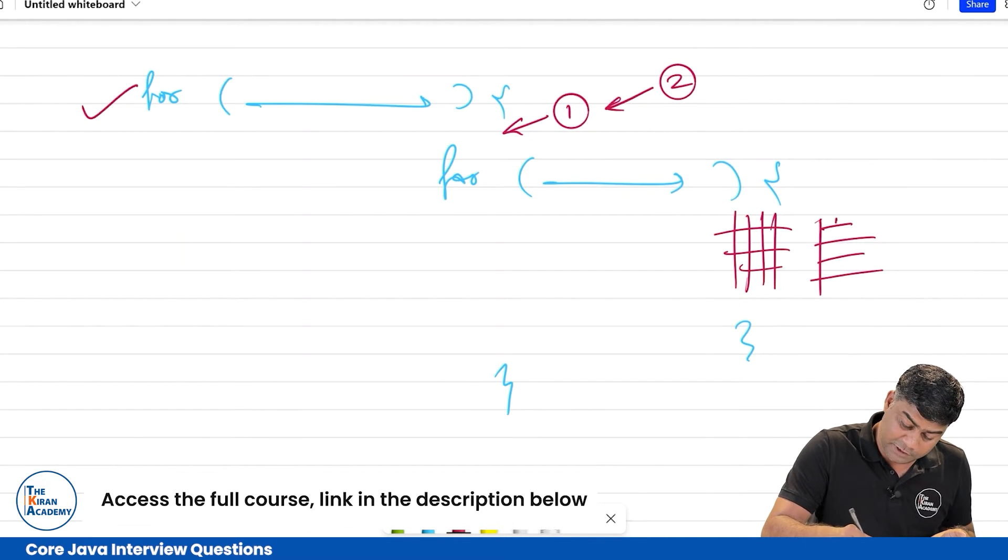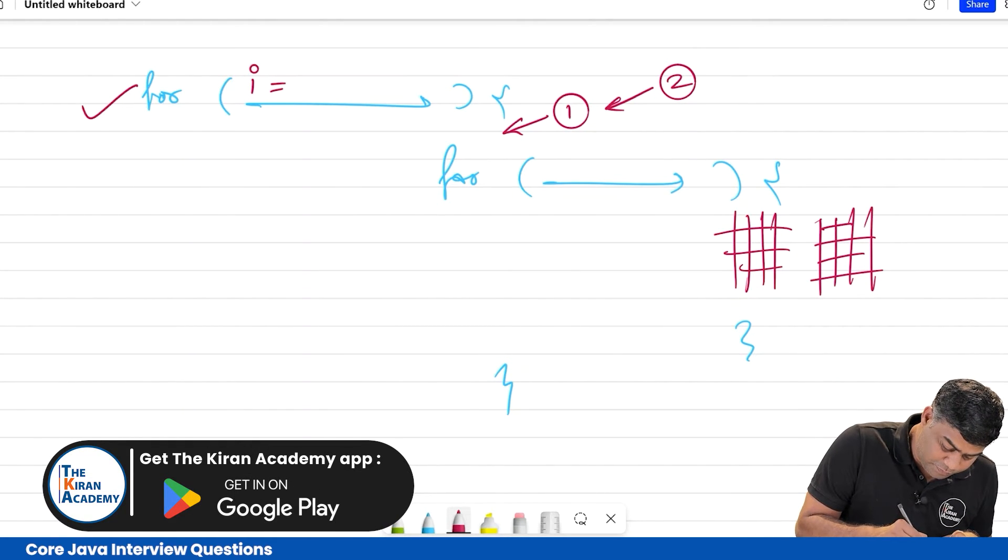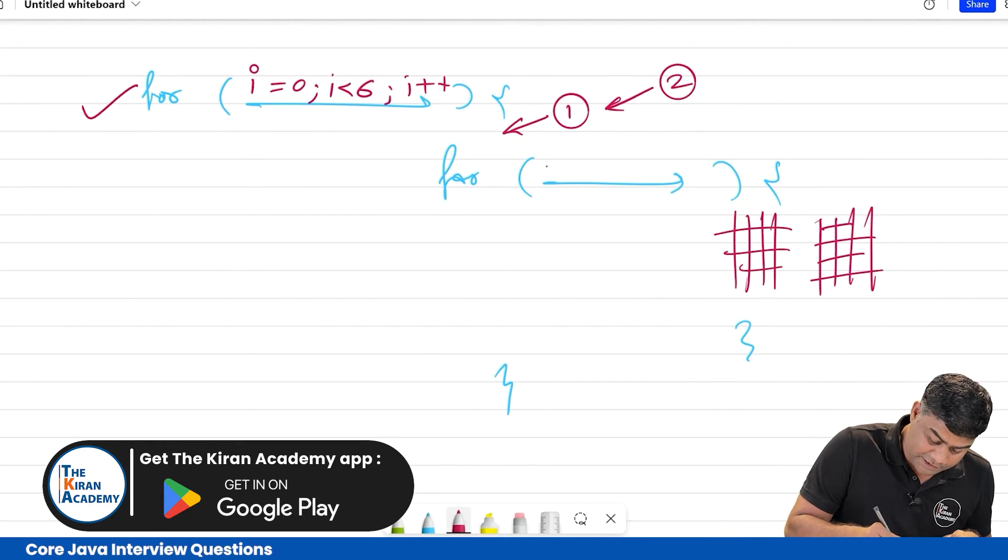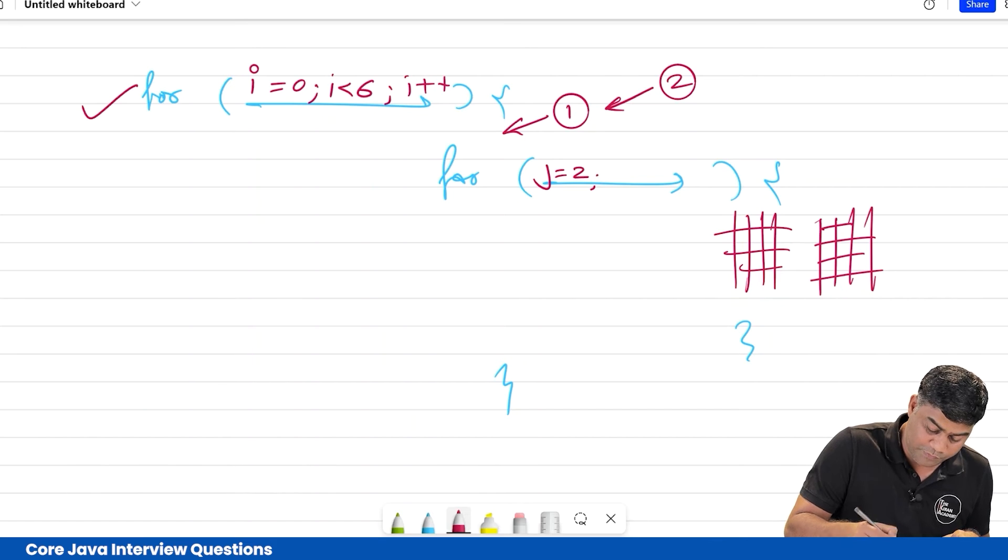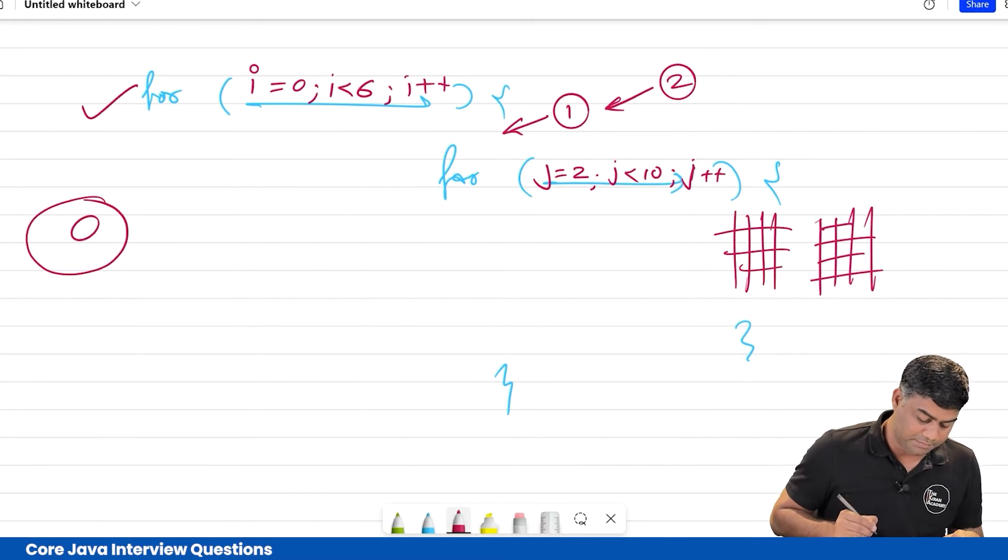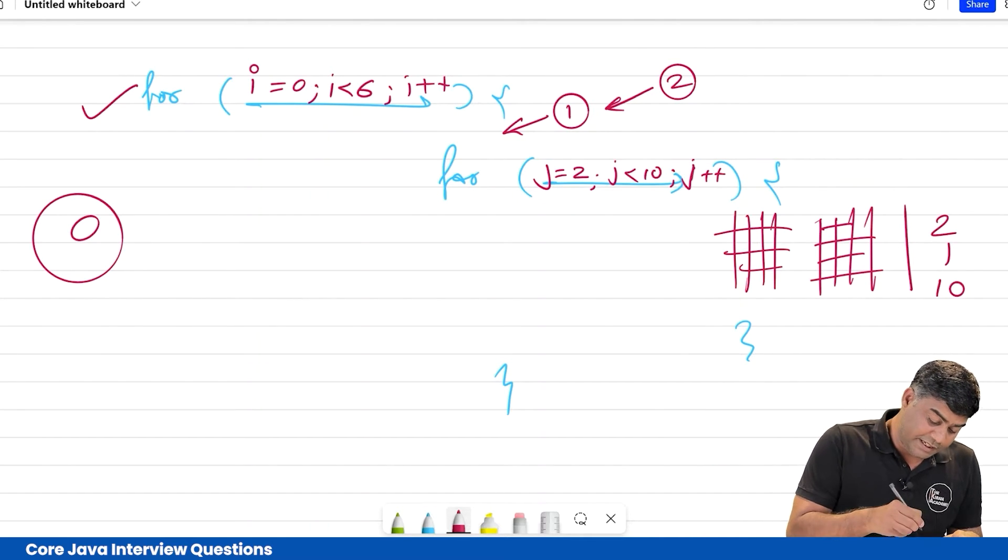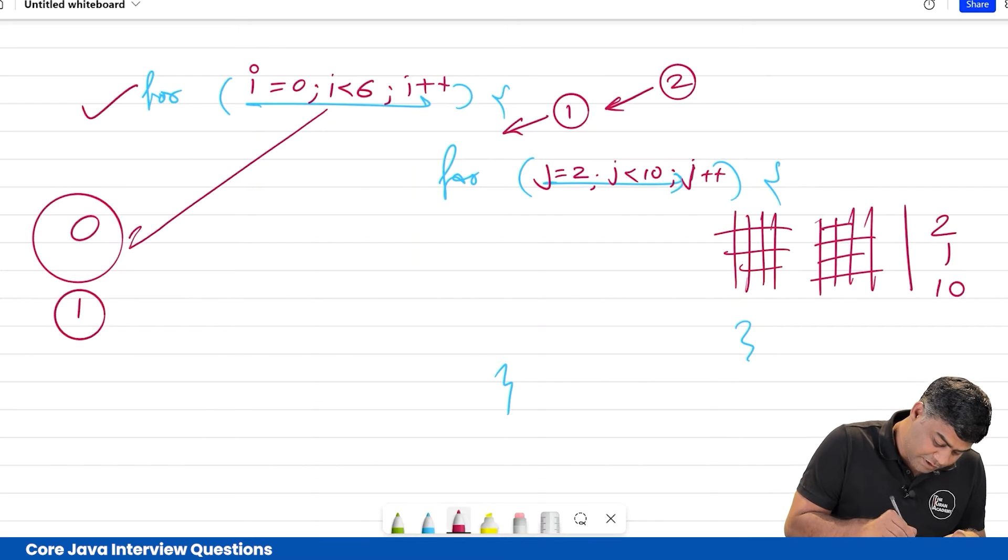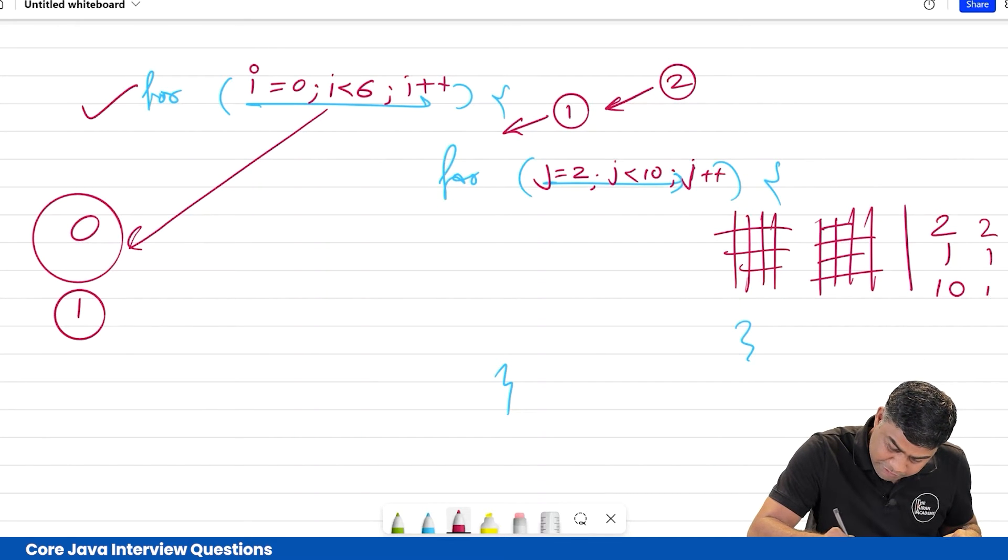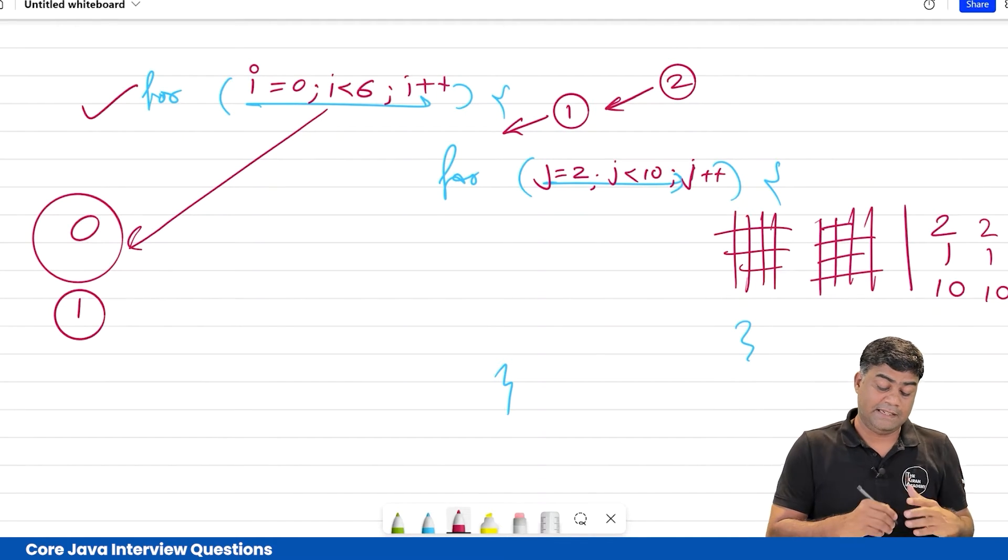I mean to say here, if i equals 0, i less than 6, i plus plus, and here j equals 2, j less than 10, j plus plus, then first it will print 0, that's not a problem. But here 2 to 10 will get printed. Then again i will print one, and again 2 to 10 will get printed. So output would be 0, 2 to 10, then again 1, 2 to 10, like that.